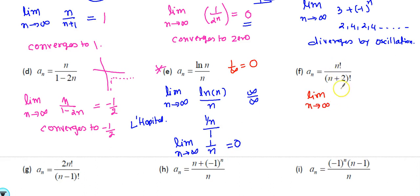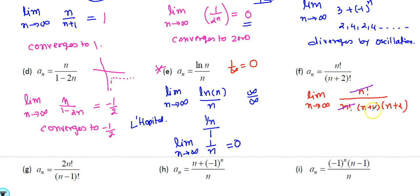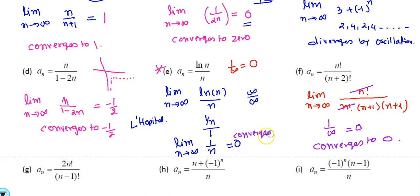For n!/((n+2)!): rewrite (n+2)! as n! · (n+1) · (n+2). The n! terms cancel, leaving 1/((n+1)(n+2)) in the denominator. This becomes bottom-heavy — one over infinity — so the answer is 0. This sequence converges to 0.